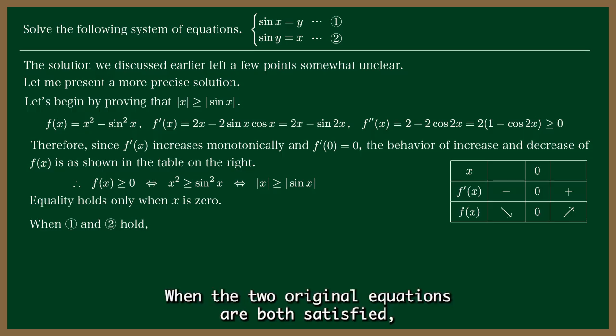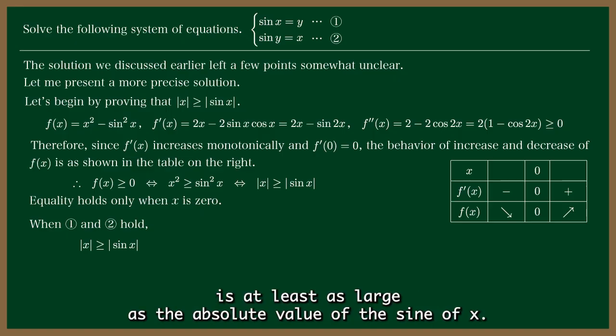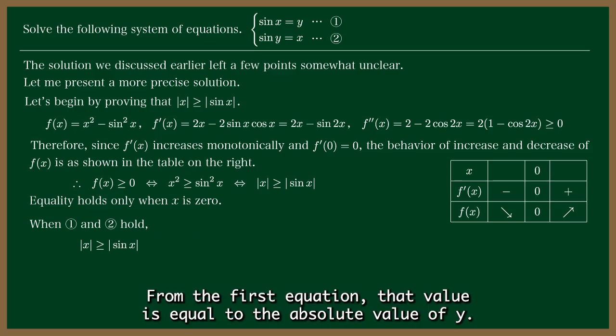When the two original equations are both satisfied, we already know from the result above that the absolute value of x is at least as large as the absolute value of the sine of x. From the first equation, that value is equal to the absolute value of y.